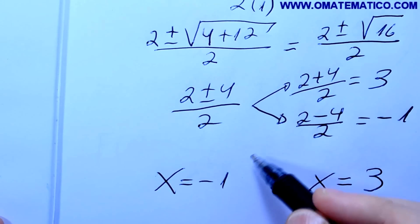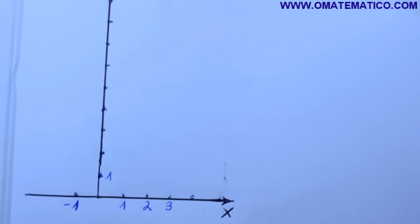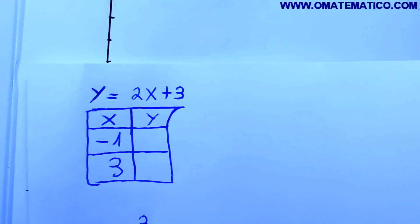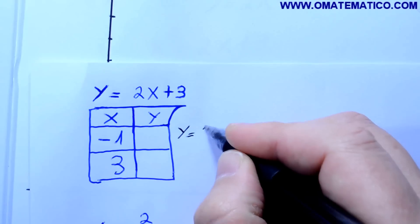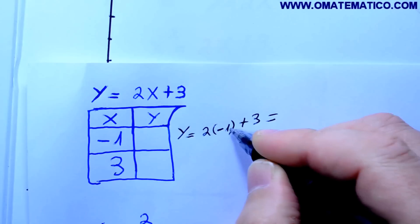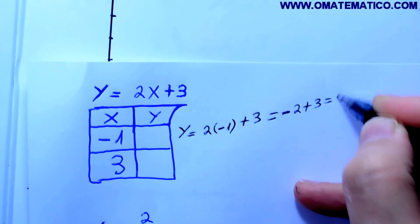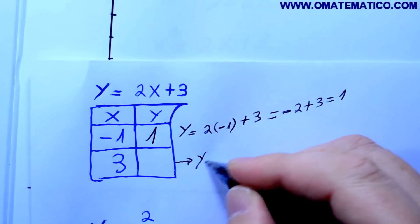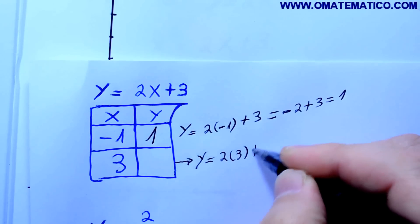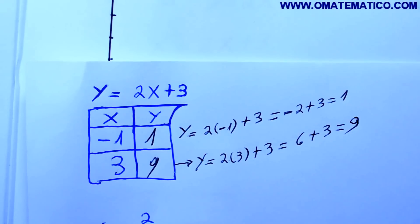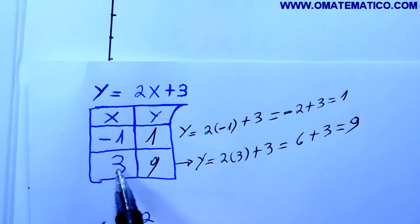Agora, vamos fazer o gráfico usando isto como auxílio. Aqui está o gráfico cartesiano. Eu já coloquei aqui a reta, os valores que eu tinha achado, que é menos 1 e 3. Calculando: y é igual a 2 vezes menos 1 mais 3 — 2 vezes menos 1 dá menos 2, mais 3, a resposta é 1. Então aqui deu 1. Colocando agora dentro da equação o 3 no lugar do x: y igual a 2 vezes 3 mais 3 — 2 vezes 3 é 6, mais 3, a resposta é 9.